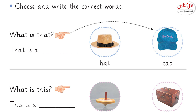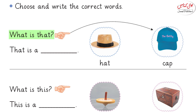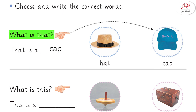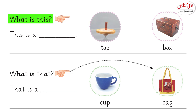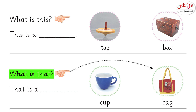Now tell me: what is that? Very good — that is a cap. The cap is far from us, that's why we select 'that is a cap.' Now tell me: what is this? This is a top. The top is nearby us, that's why we use 'what is this — this is a top.'